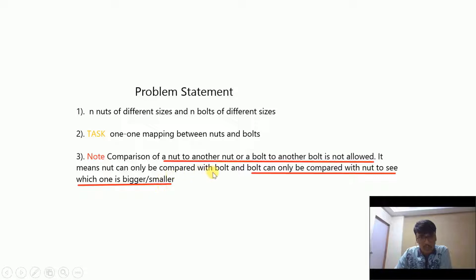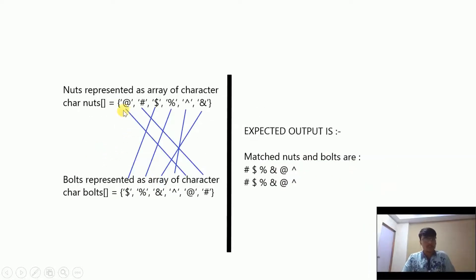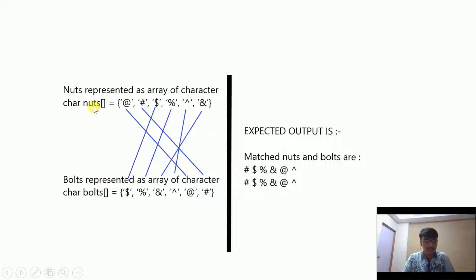We can only compare a bolt with a nut and a nut with a bolt to see which one is bigger and which one is smaller. We are given n nuts, each with a unique symbol so you can identify them. Similarly, n bolts are each given a unique symbol. For every nut there is a bolt, so we need to map every nut with its corresponding bolt.